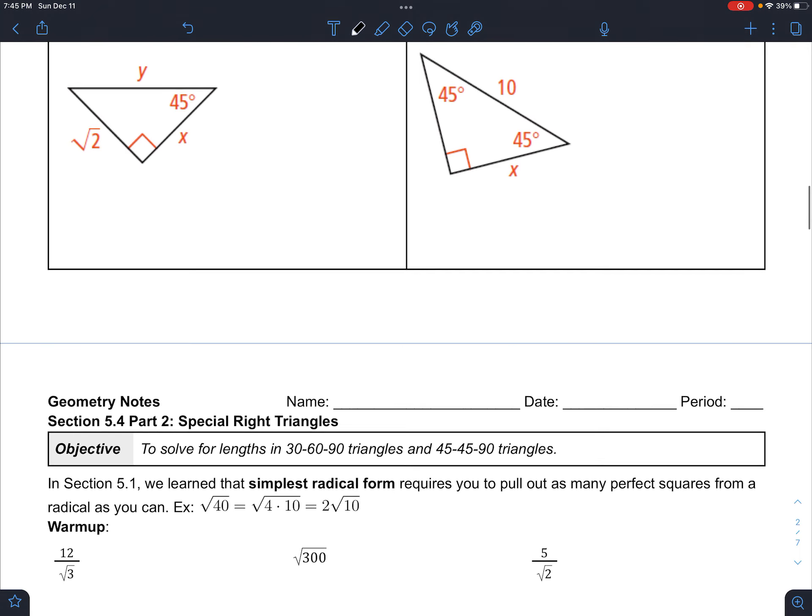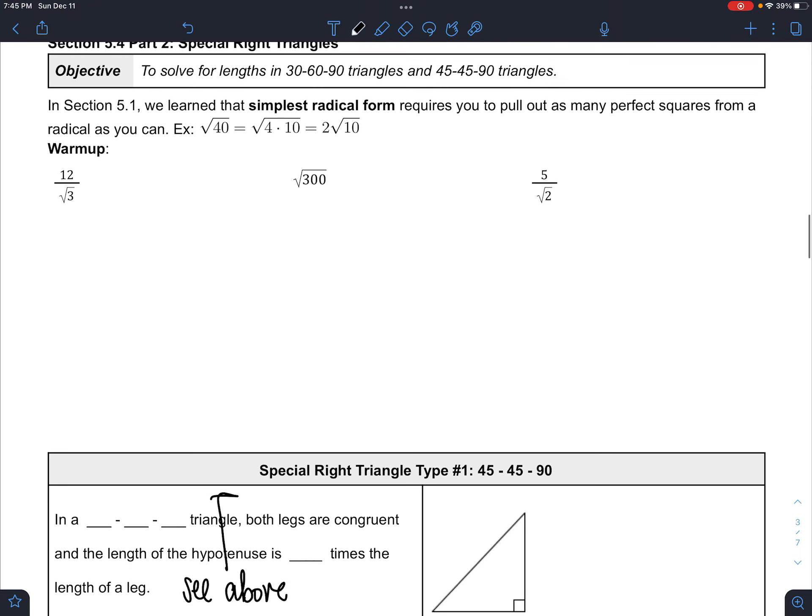Let's go ahead and continue. These are the homework questions for part 1, and then we also have part 2, which is just a few more practice examples. And I'd like you to try the warmup, get those done. You should get, let me write down the answers for you so you can work through that: 4 square root 3, 10 square root 3, and 5 square root 2 over 2. That's what you should get for those.